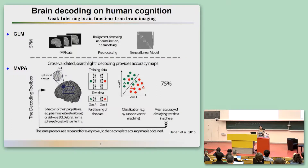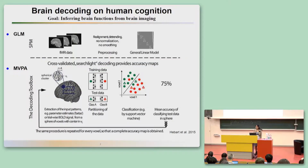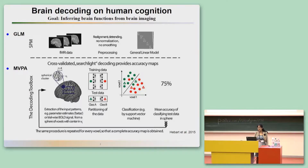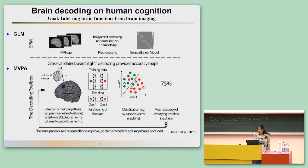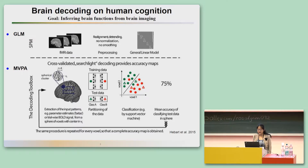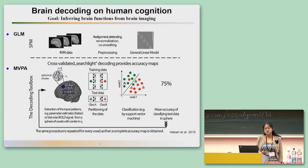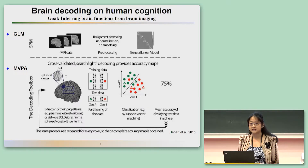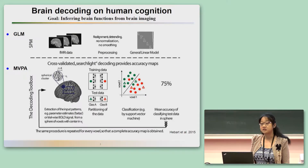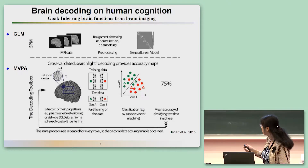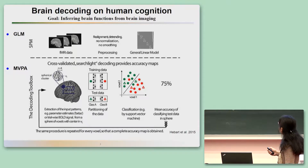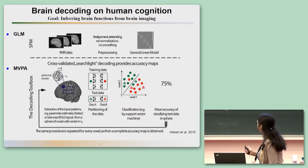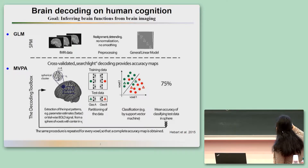Brain decoding has been one of the classic problem topics in neuroscience research, with the goal of inferring a brain state given a short time series of brain scans. In the literature, there are two types of methods, including statistical tests and the generalized linear model, and another type using more modern machine learning methods, such as classifiers like SVM.